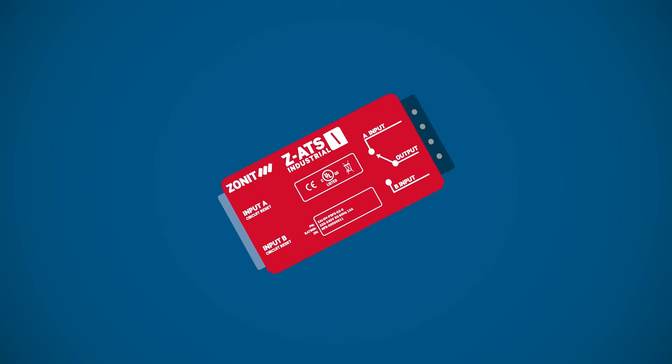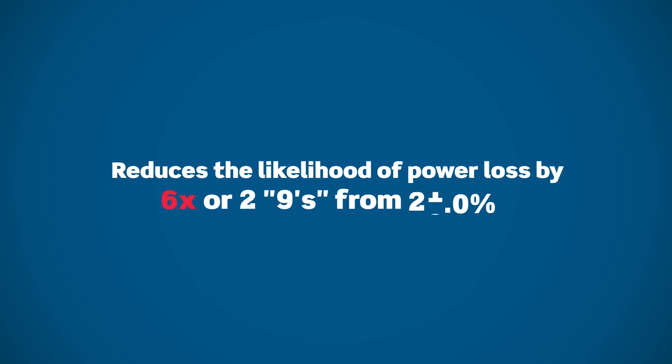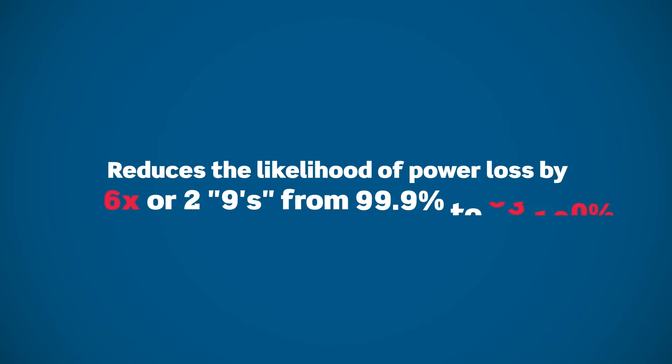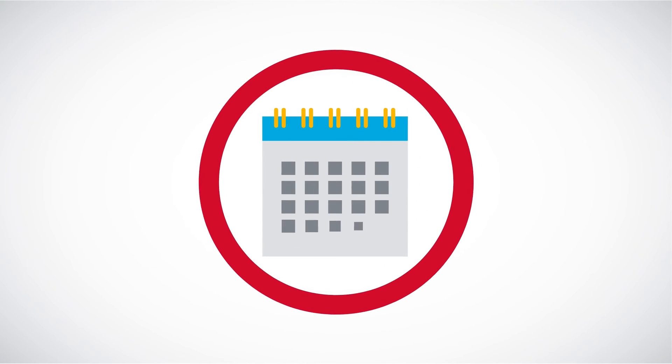The ZATS Industrial reduces the likelihood of power loss by six times, or two nines, from 99.9% to 99.999%. And the maintenance bypass helps you maximize uptime while reducing operating costs by performing maintenance and battery replacement on your schedule.